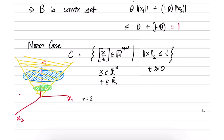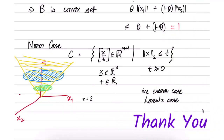In higher dimensions the structure generalizes in the same way. In three dimensions this cone also looks like an ice cream cone. Another name for it is the Lorentz cone. The norm cone is very useful and will arise at several places throughout the course — there is a whole class of problems called second-order cone programs which utilize the structure of the norm cone, and several algorithms have been developed around it.